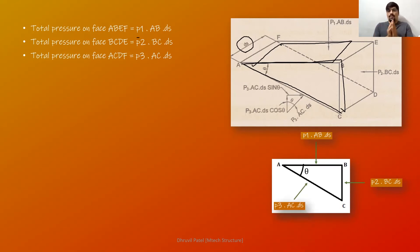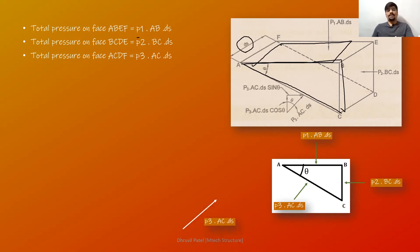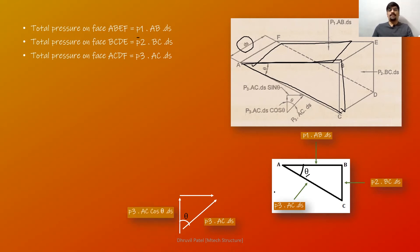The vertical pressure is P1·AB·DS and the horizontal pressure is P2·BC·DS. P3 is the diagonal pressure and we need to convert it into its horizontal and vertical components for further calculation. Using the angle θ from the 2D figure, the vertical component of P3 is P3·AC·cos θ·DS and the horizontal component of P3 is P3·AC·sin θ·DS.